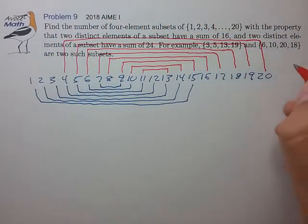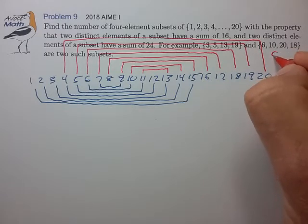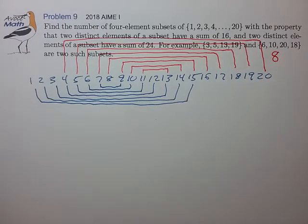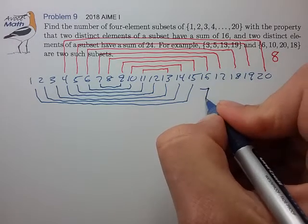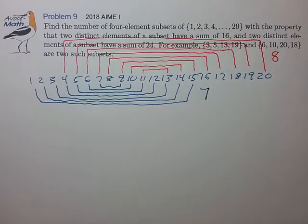Okay, so there are 8 such pairs that add to 24. Let's call those the red pairs. And there are 7 such pairs that add to 16. Let's call those the blue pairs.